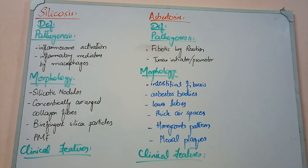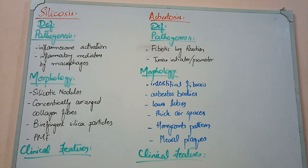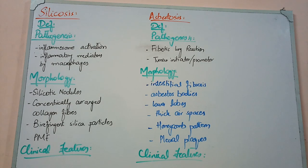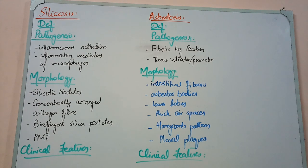Obstructive lung diseases we have already covered. I will tell you all about the important topics so that we have time to cover everything. In the lungs there are tumors, some morphologies, things like pneumonia, TB, and other conditions. We will touch on those and move forward. So our overview is going to be done.